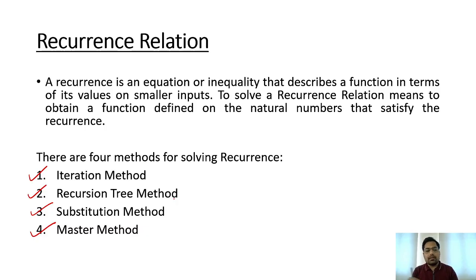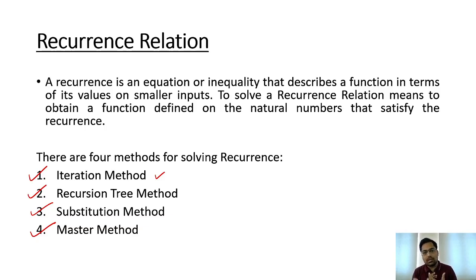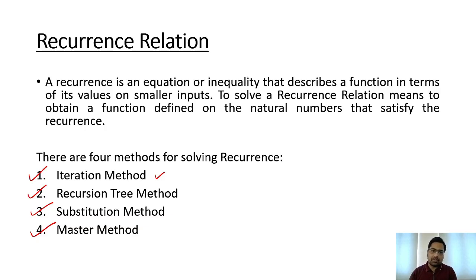These four methods will be covered in the next videos. In the iteration method, you find an unknown function's value by substituting it with the initial function, iterating the number of times needed.